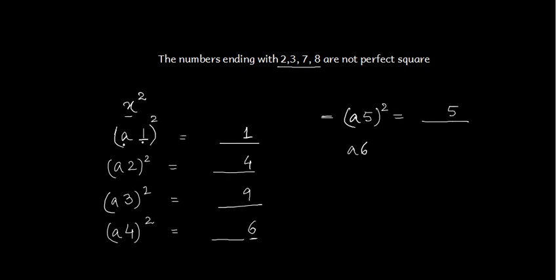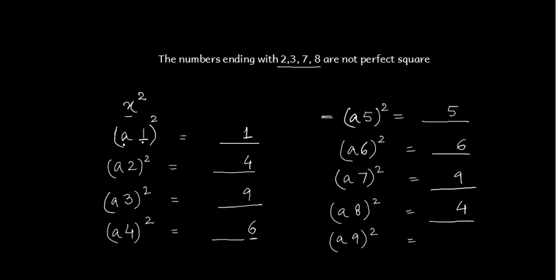Now if it is a 6, the digit at unit place would be 6. If it is a 7, the digit at unit place will be 9. If it is an 8, the digit at unit place will be 4. And if it is a 9, the digit at unit place will give us 1.